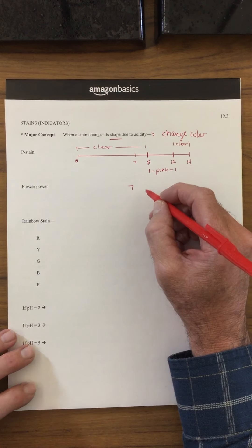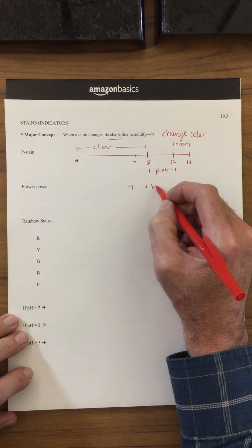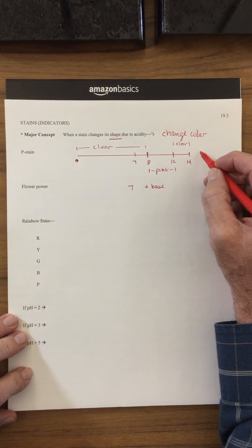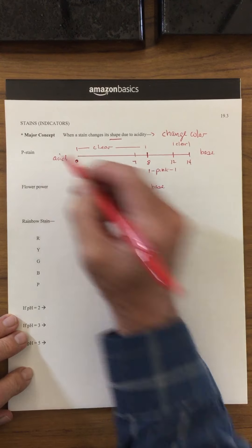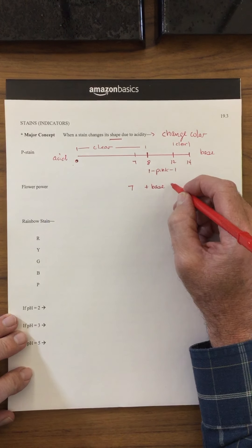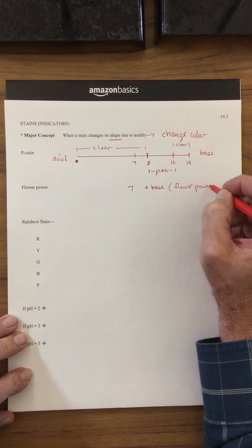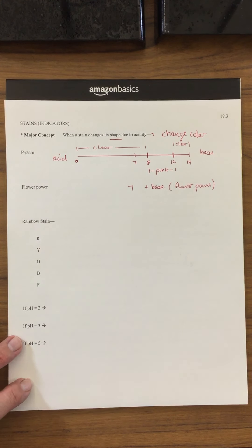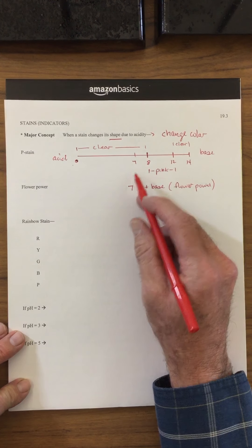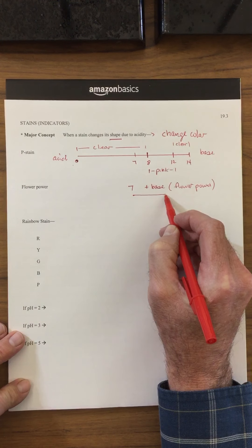But what I did is I added some of the flower power, and the flower power is base. If you add a base—remember your bases are over here, your acids are over here—so if you add a base, this was the flower power, it's actually ammonia which is a base. What's going to happen to your pH is it's going to shift from neutral and then go into the base.